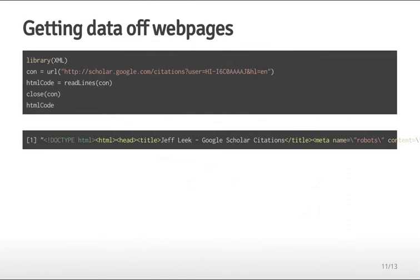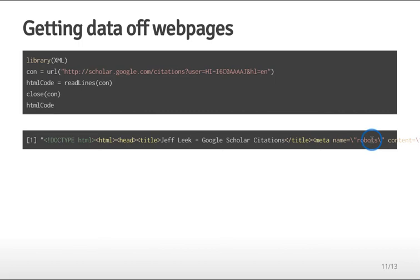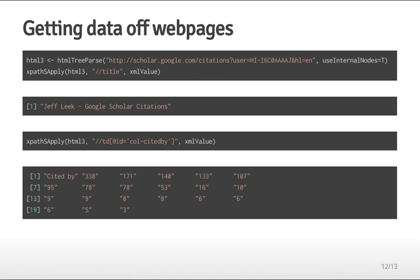One approach is using readLines on a URL connection — passing the Google Scholar profile URL, reading lines, then closing the connection. However, this HTML file is all on one line, making it hard to work with. An easier approach is to use the XML package, specifically the htmlTreeParse function, which parses an HTML page and breaks it into its components, storing them in a structured R object.